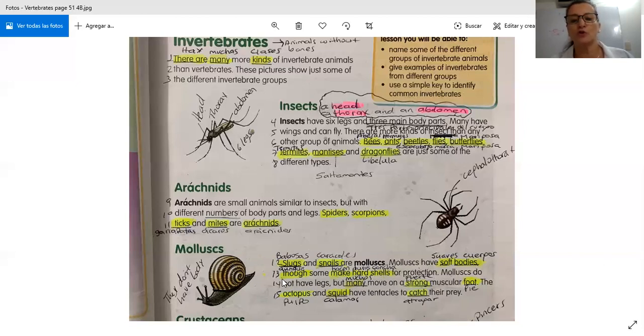Los moluscos no tienen patas. Pero muchos se mueven en un pie muscular muy fuerte. Muy fuerte para que ellos se puedan arrastrar. The octopus and the squid, el octopus y el squid, que lo vimos en dos páginas anteriores, tienen tentacles. Tentáculos para atrapar a su presa.